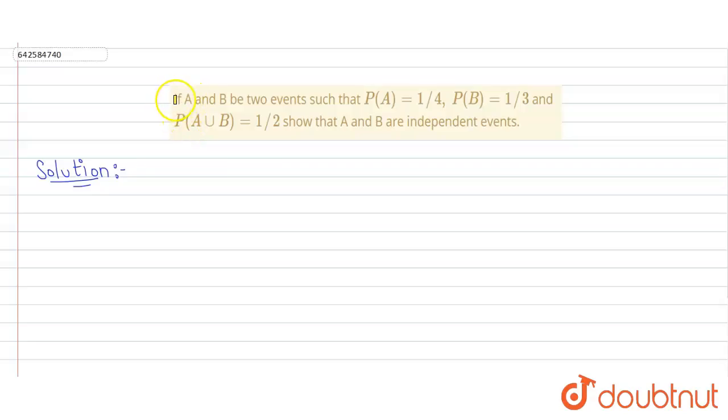Hello guys, so our question is: if A and B be two events such that P(A) is 1/4, P(B) is 1/3, and P(A∪B) is 1/2,